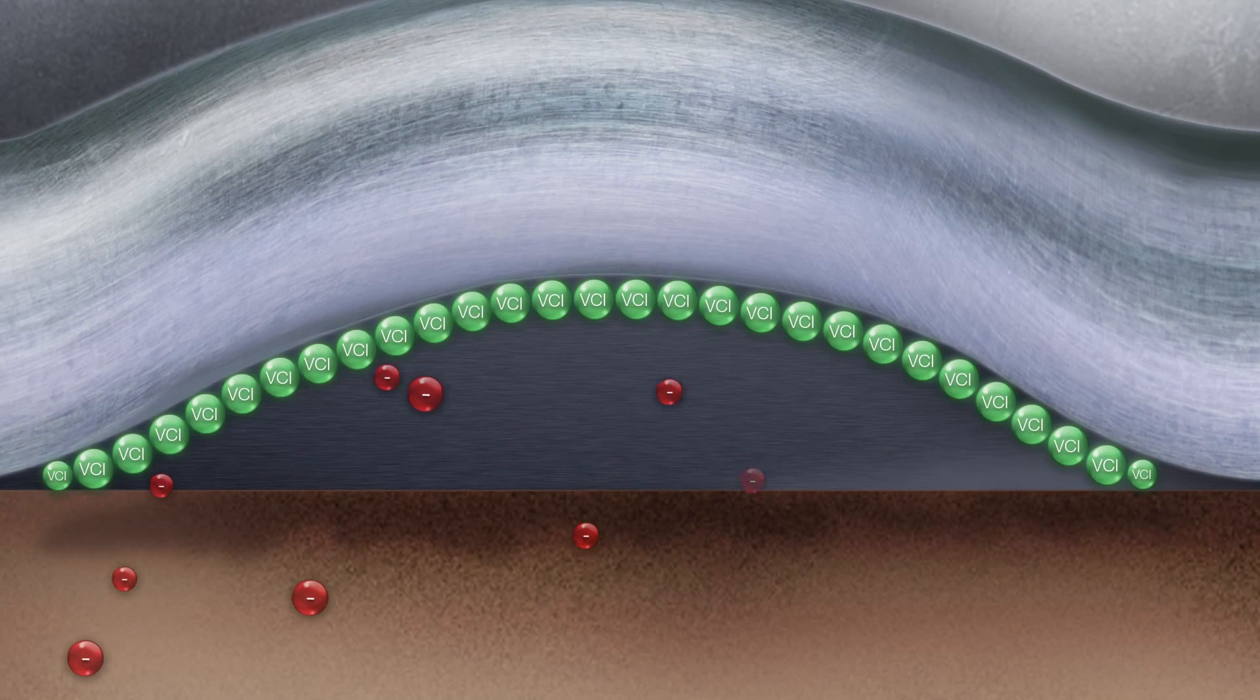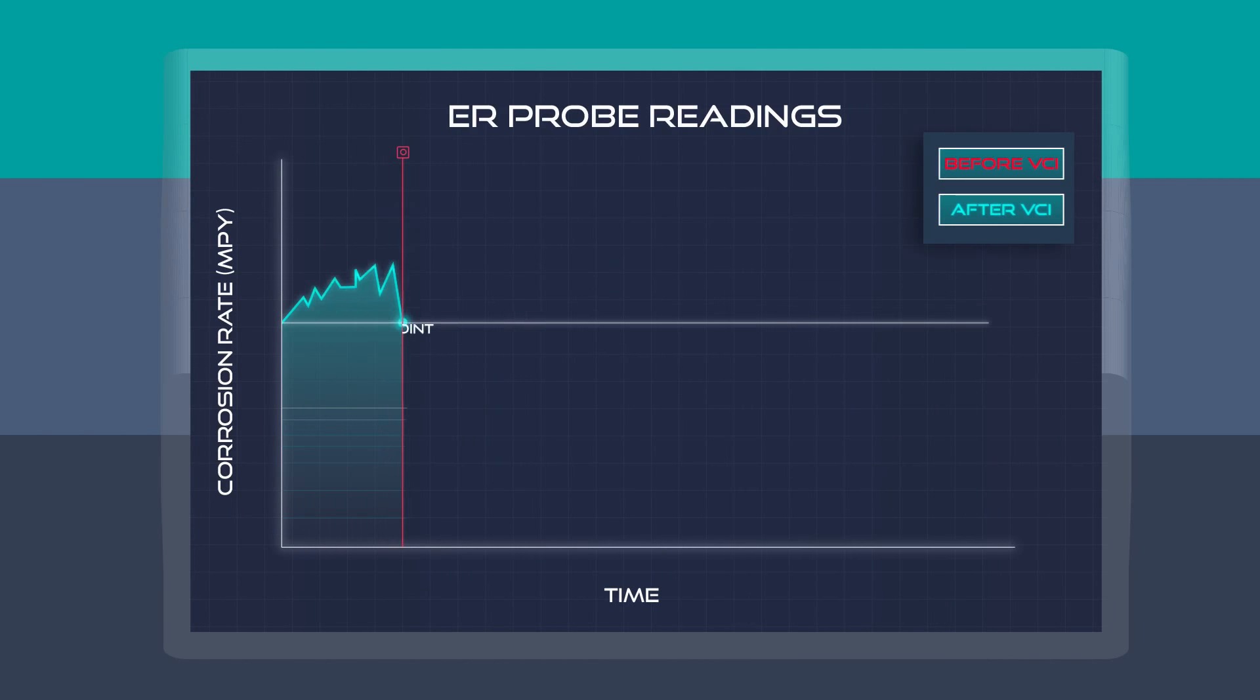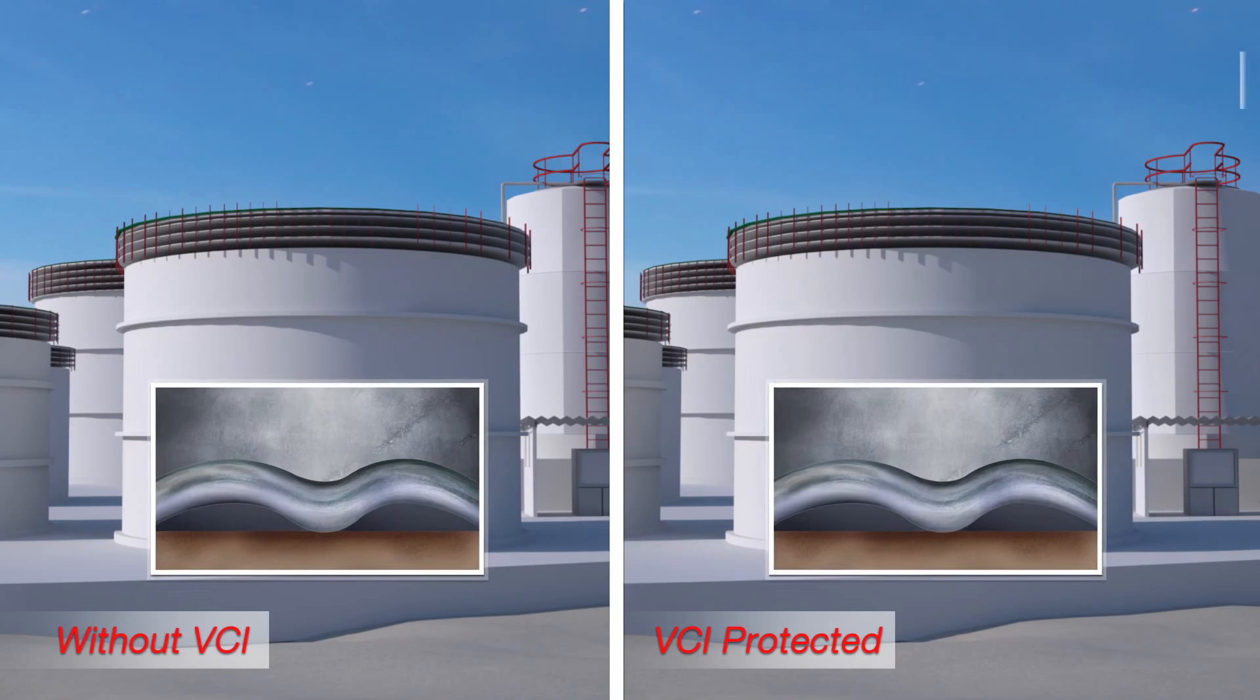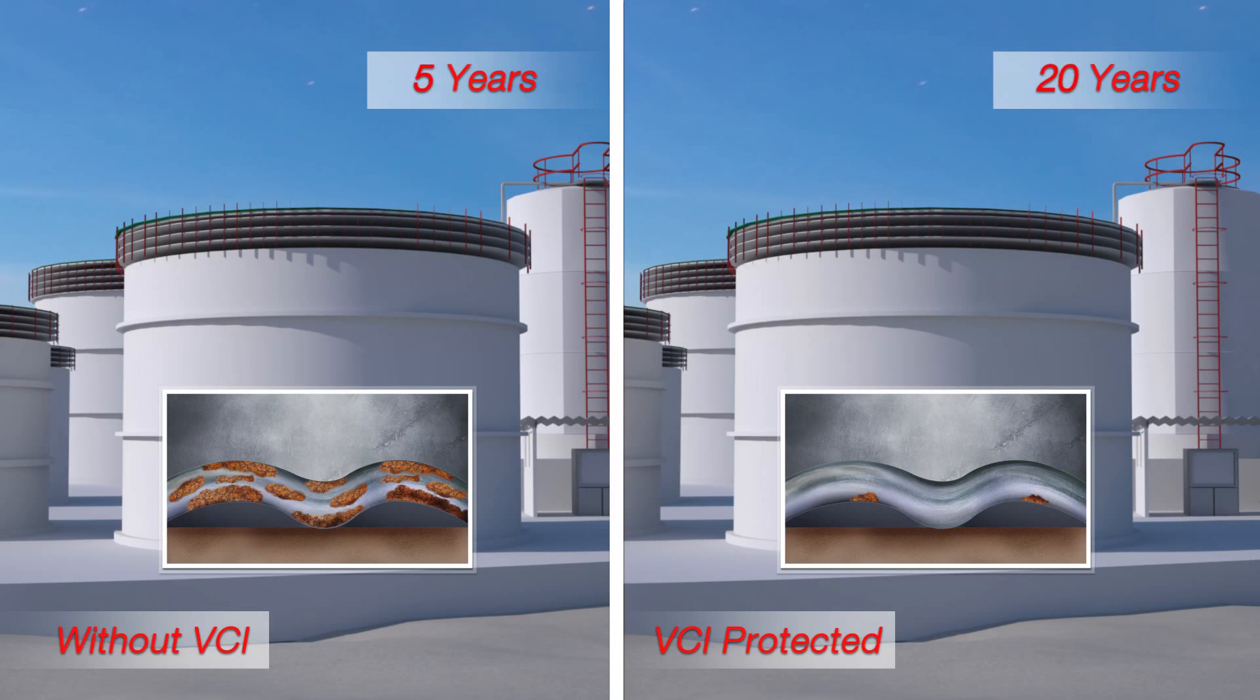It incorporates the use of ER probes for measuring corrosion rates before and after the introduction of VCI and absorption process. It can be used in already in-service tanks as well as new construction of tanks.